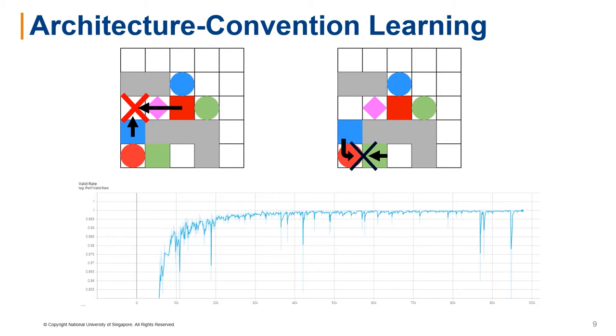Interestingly, following from the high valid rate, agents can also learn when they are inside corridors even though this information is not provided to them explicitly through the observation.